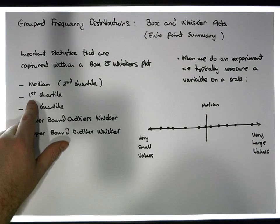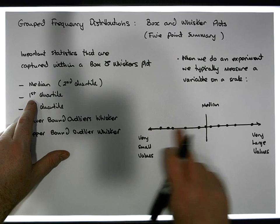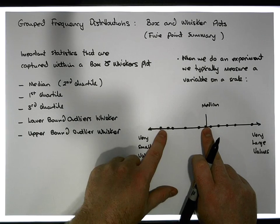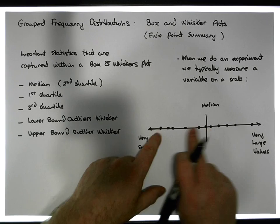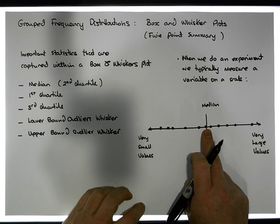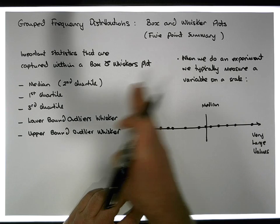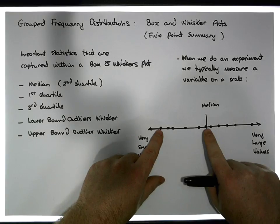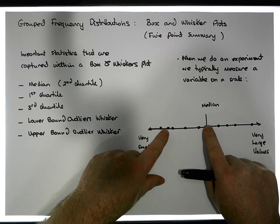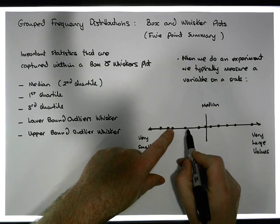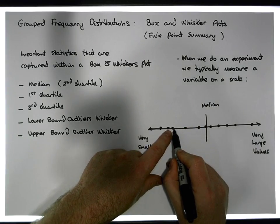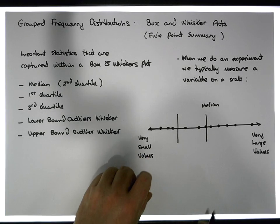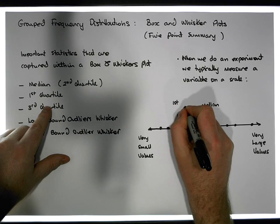The first quartile is found by considering the first half of the data set and asking: what point cuts that half in half? We have five values in that half. Crossing off pairs, the value that cuts it in half must be halfway between the two middle values. That value is the first quartile.